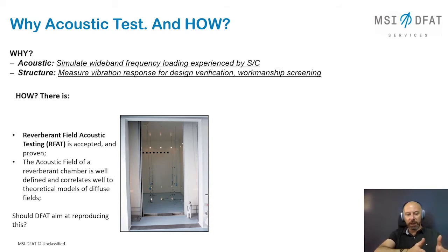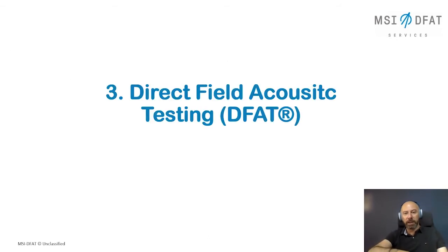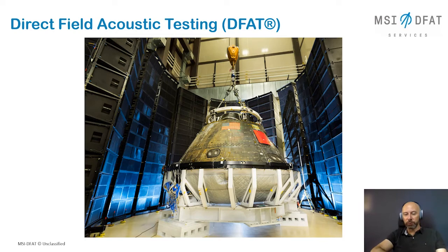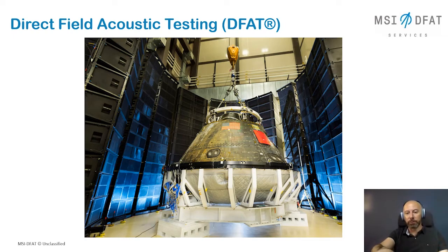Today there is another way: direct field acoustic testing. DFAT is carried out by means of loudspeakers placed in a circle that surround the test item, to reproduce the launcher requirement of a uniform and diffused field. The challenges are multiple — size, levels, and technology — but it is now available as an alternative to the reverberant chamber.